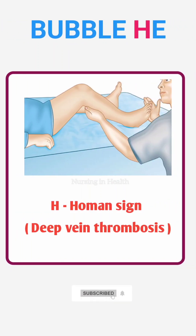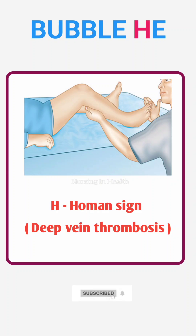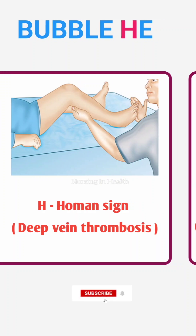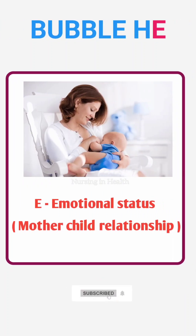H means Homan's sign. In the supine position, when dorsiflexion of the foot is done, if pain is felt in the calf muscle behind the knee, it is a positive Homan's sign and indicates the presence of deep vein thrombosis.